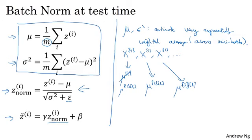So just as we saw how to use an exponentially weighted average to compute a mean of theta 1, theta 2, theta 3, when you are trying to compute an exponentially weighted average of the current temperature, you would do that to keep track of what's the latest average value of this mean vector you've seen. So that exponentially weighted average becomes your estimate for what the mean of the z's is for that hidden layer.